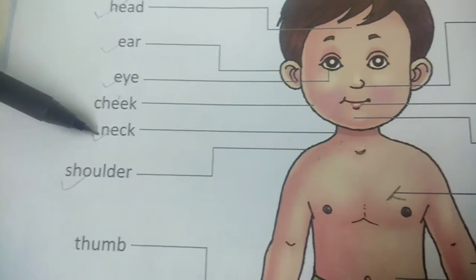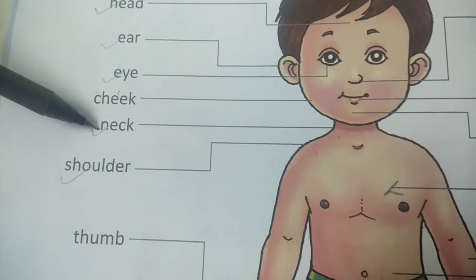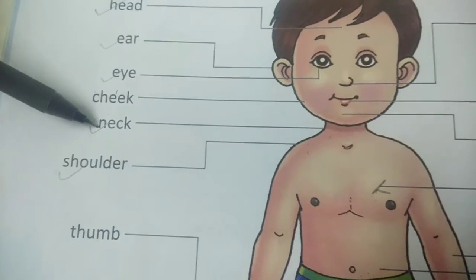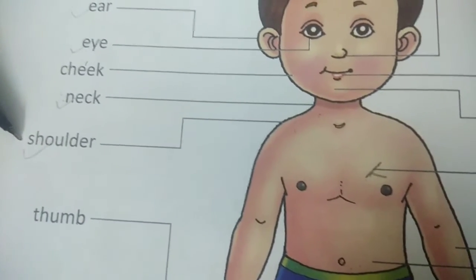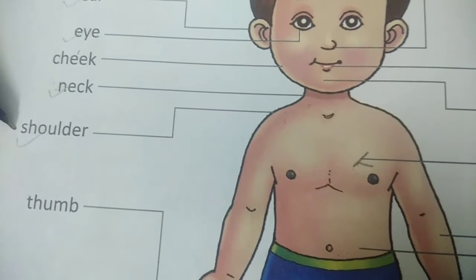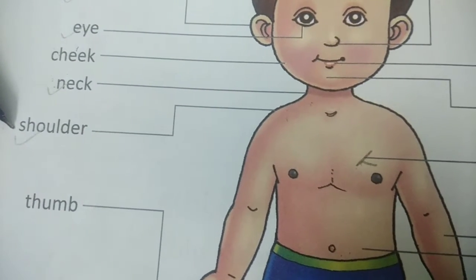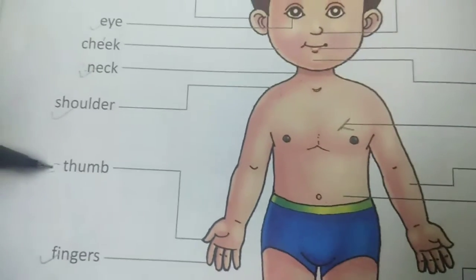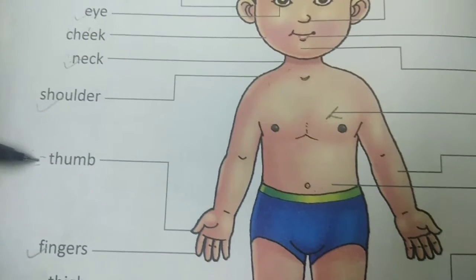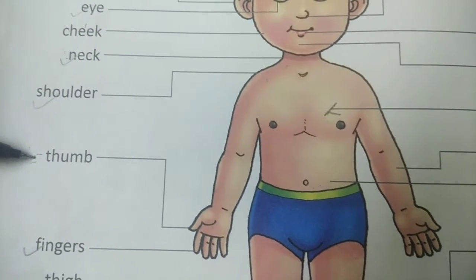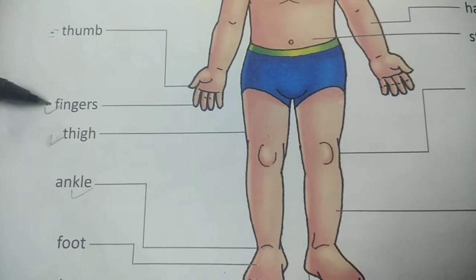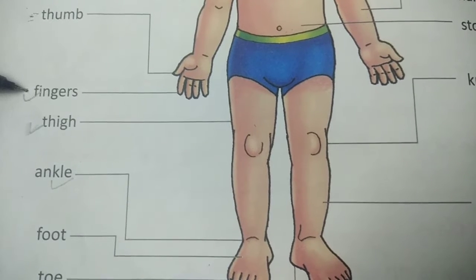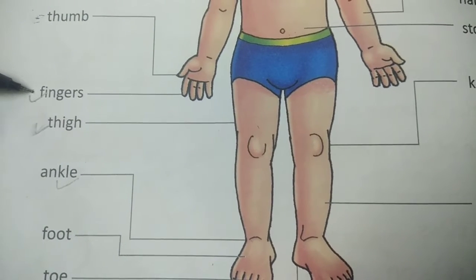Neck: the part of the body of an animal or human being that connects the head and the trunk. Shoulder: the part of the body between each of the upper joints of a person's arms and the neck. Thumb: the short thick inner digit of the human hand next to the four fingers. Fingers: the five long extremities each on both hands, used for grabbing things.